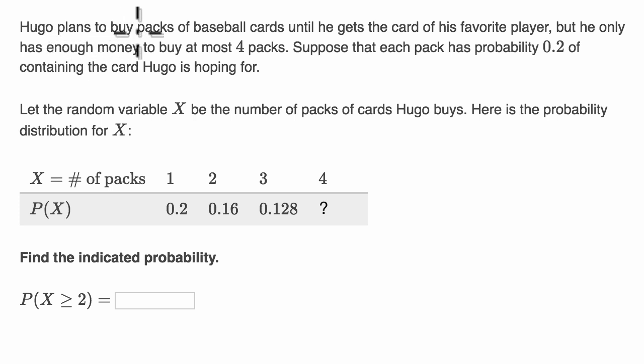Hugo plans to buy packs of baseball cards until he gets the card of his favorite player, but he only has enough money to buy at most four packs. Suppose that each pack has probability 0.2 of containing the card Hugo is hoping for.